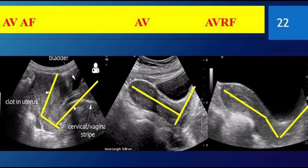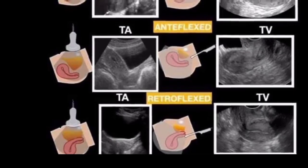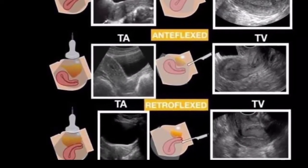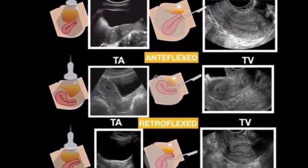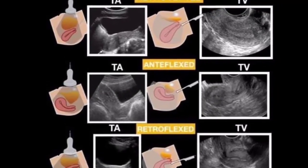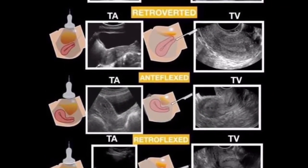The vagina, uterus, and the urinary bladder are used as reference points for identification of the remaining normal and abnormal pelvic structures. The uterine size, shape, and orientation should be identified and documented in sagittal and transverse axial planes.